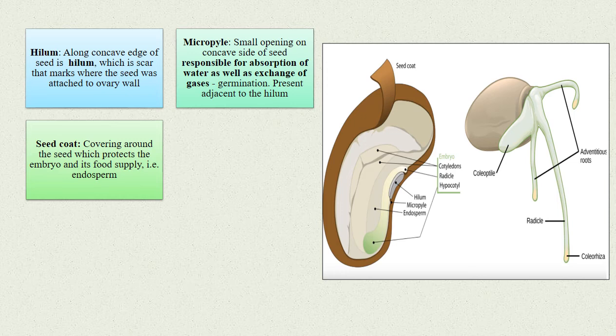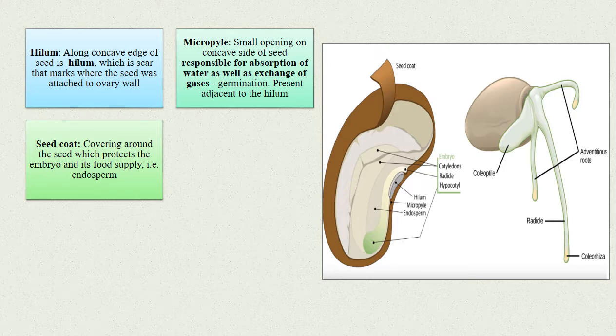Seed coat: It is a covering around the seed, which protects the embryo and its food supply, i.e., endosperm.